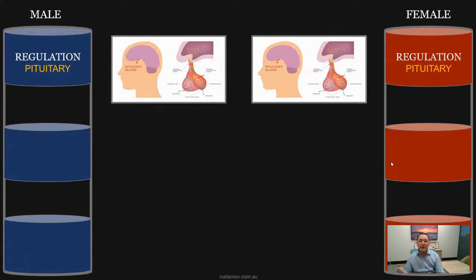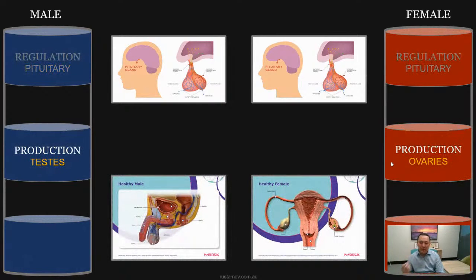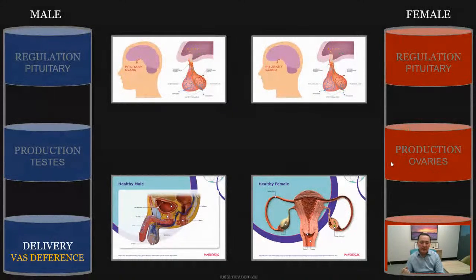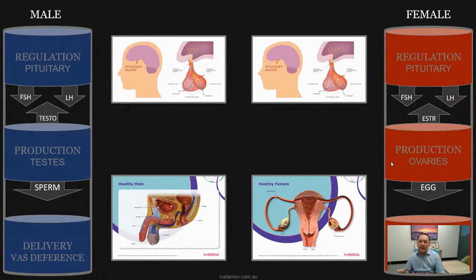For each function there is an anatomic structure responsible. Regulation is undertaken by the pituitary gland in both men and women. Production of gametes takes place in the testes in men and ovaries in women. Delivery of gametes is the function of the vas deferens in men and fallopian tubes in women. Messenger hormones keep this process going — FSH and LH are produced from the pituitary, and these are the same hormones for both male and female.